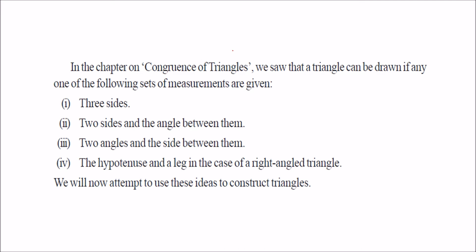In congruence of triangles, when two triangles are congruent, there are certain criteria: three sides (SSS), two sides and the angle between them (SAS), two angles and the side between them (ASA), and RHS — the hypotenuse and a leg in the case of a right-angle triangle. With these in mind, we can construct triangles.